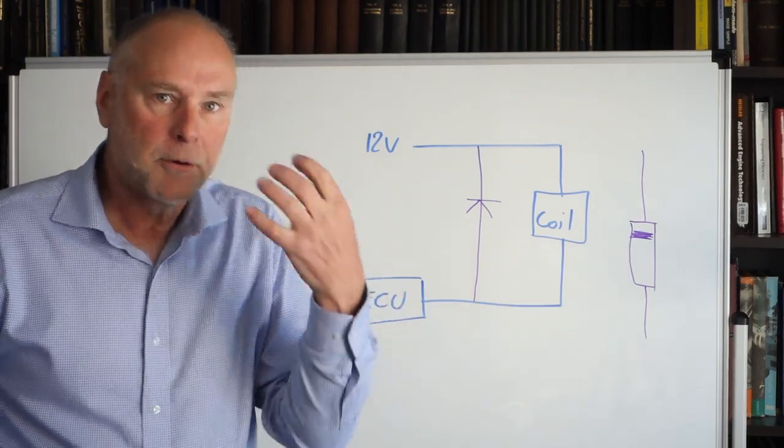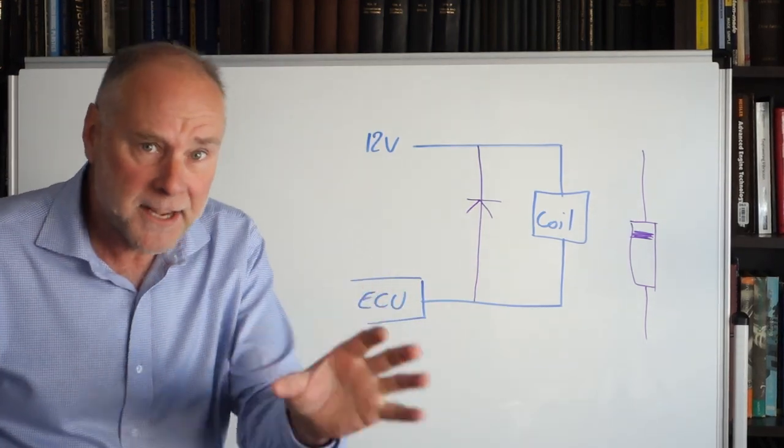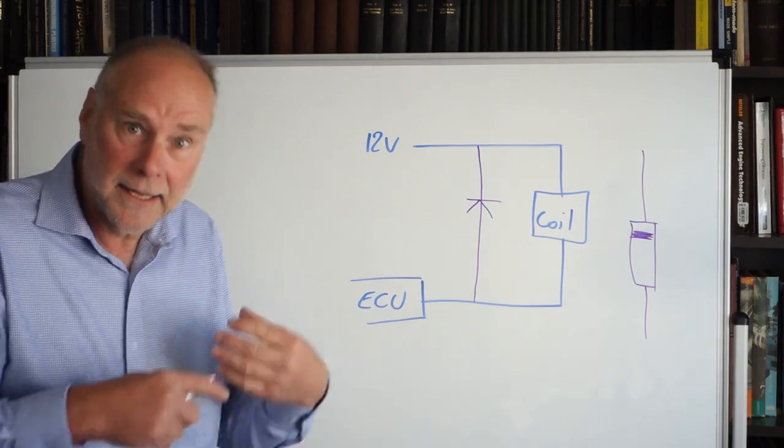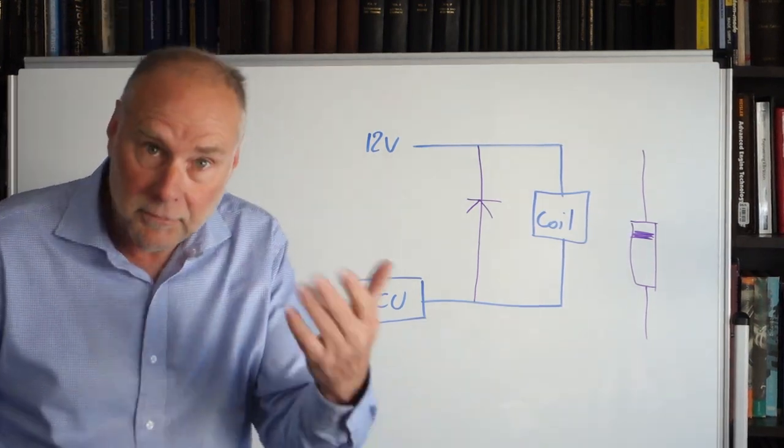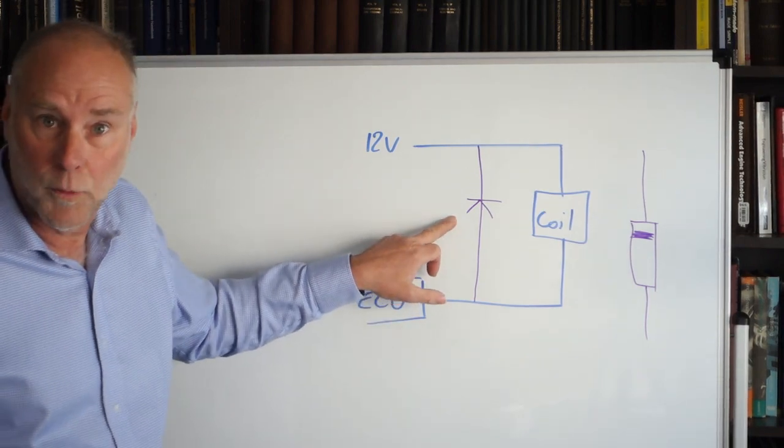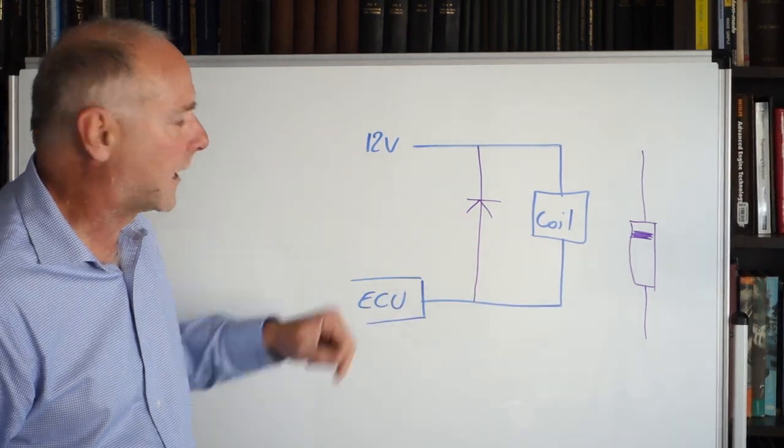If you are using an output on your ECU that is not protected by a diode internally, and you are driving something that's got a coil, like a solenoid, like even a relay, always protect it with a freewheeling diode mounted like that.